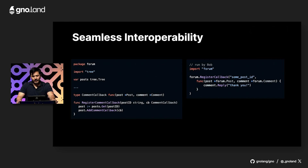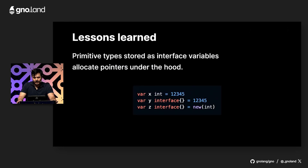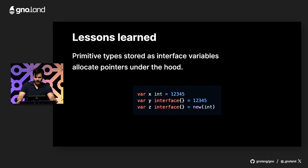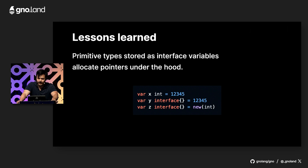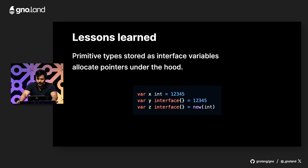Let's talk about Go and what we've learned while implementing this virtual machine. One thing we learned is that primitive values, like integers, when stored in an interface variable, are actually stored under the hood as pointers. X only takes 8 bytes because it's an integer. But Y, when you assign numbers 1 through 5 to it, actually allocates a pointer to an integer — so it takes 24 bytes — and puts more pressure on the garbage collector. Y and Z here require the same amount of memory, which is unexpected. This behavior changed in Go 1.4, so some old blog posts may not be correct.